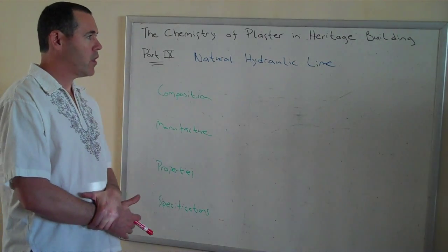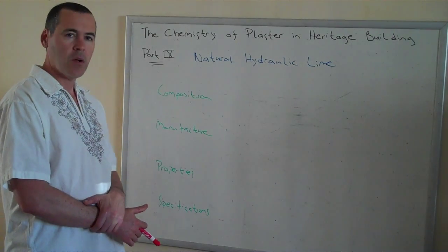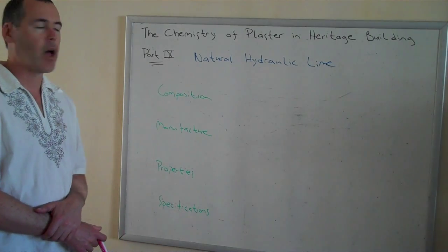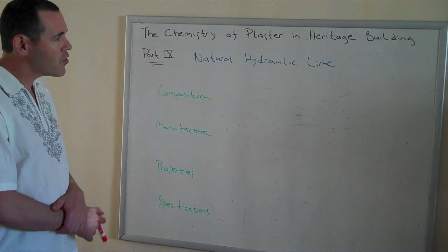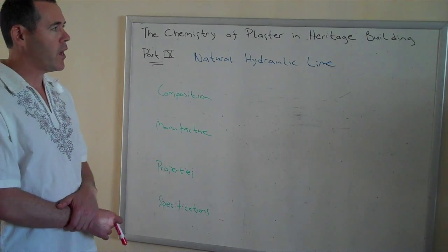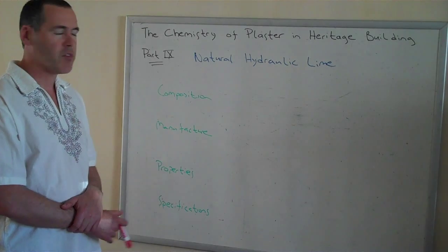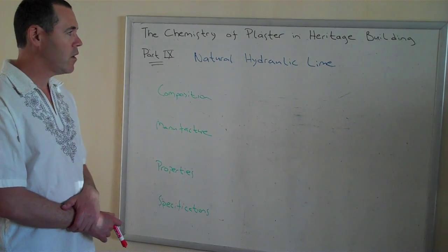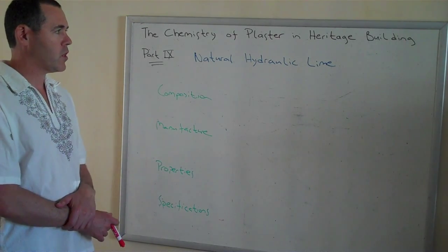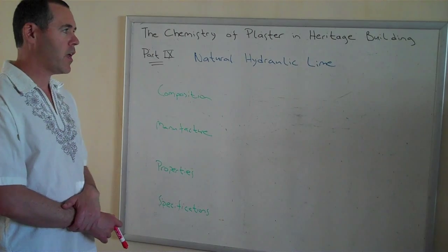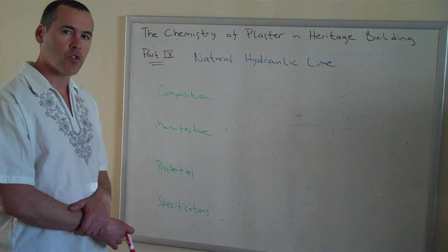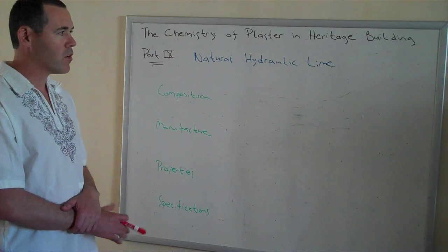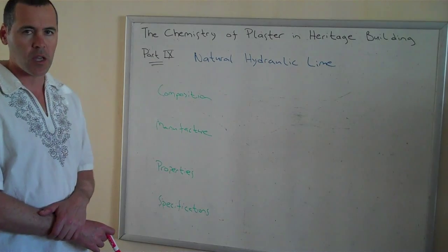Where do natural hydraulic limes come from? Why are they different than regular lime? Well, they start off the same way — the same type of sedimentary limestone beds. But at some point in time, they have an infiltration of active, what they call amorphous silica.